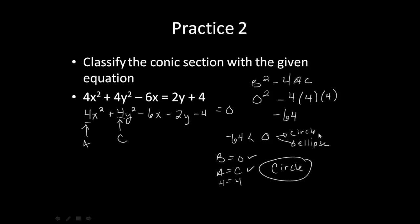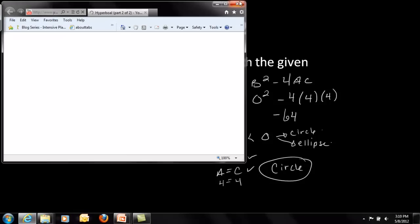Well, that negative 64 is less than zero, so that leads me to the option of having a circle or having an ellipse. So, then I went and I checked. Was b equal to zero? That was a yes. And then, was a equal to c? That was a yes.